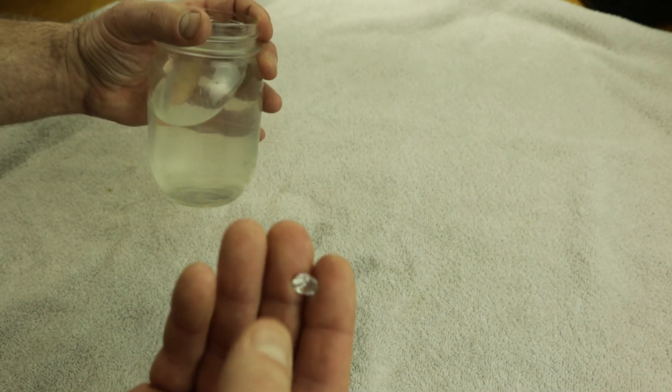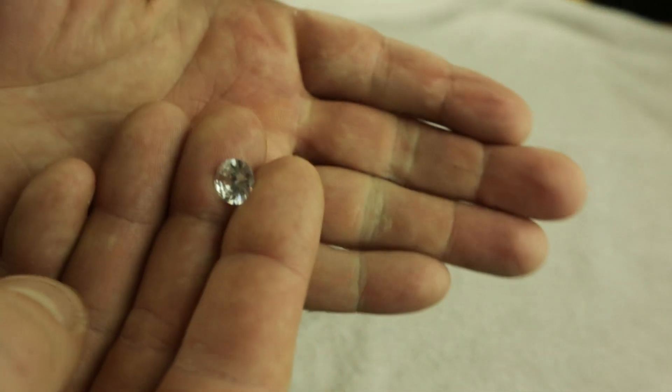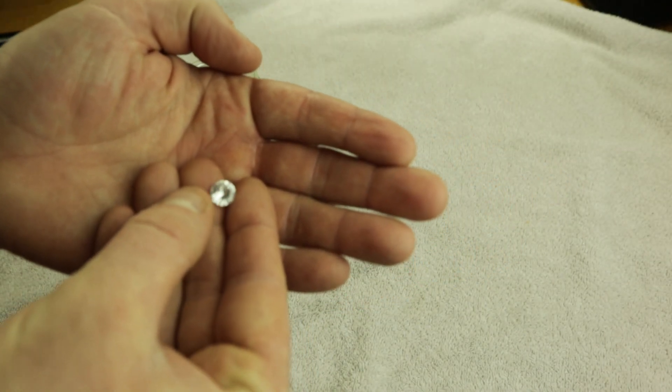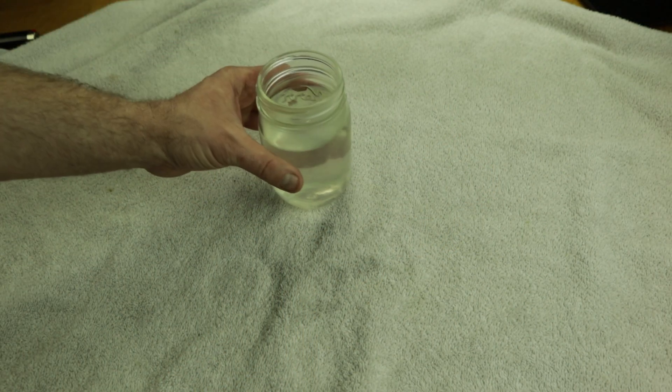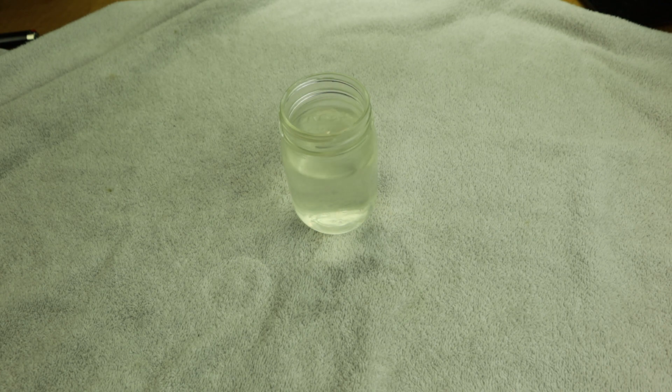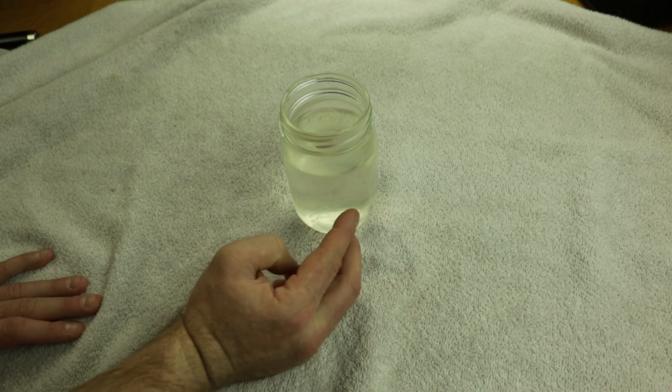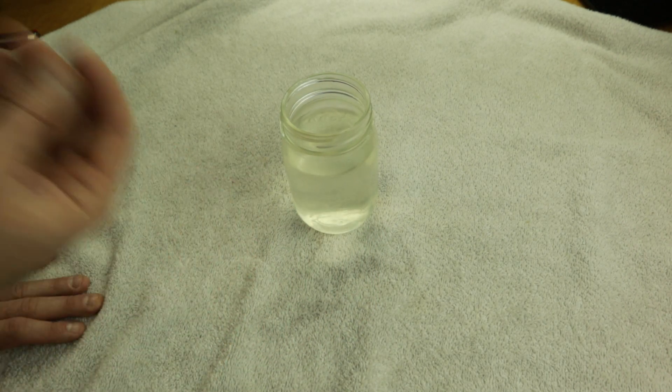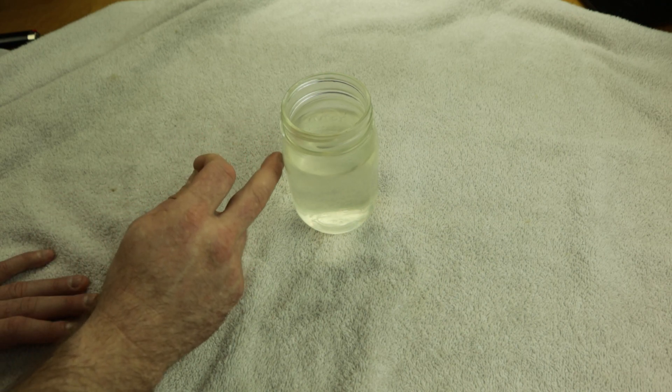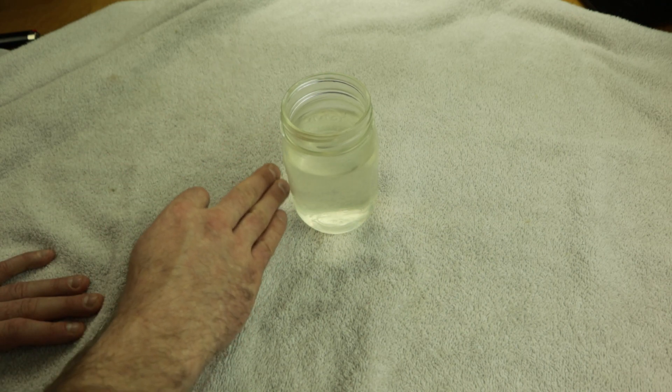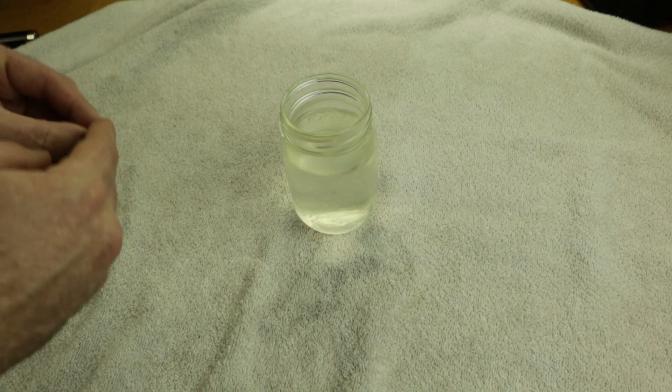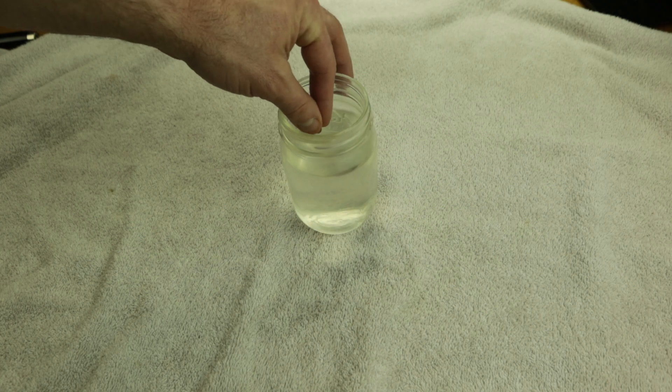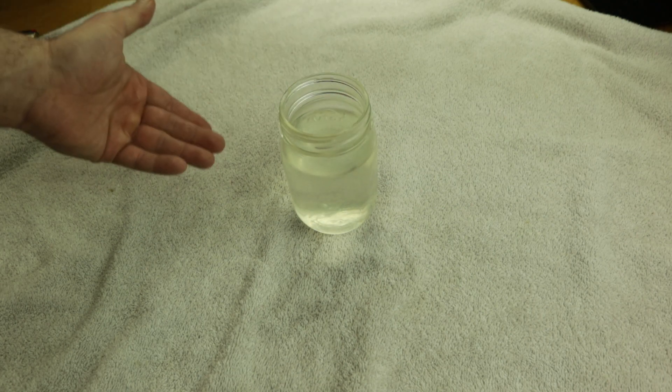The diamond itself looks totally fine, there's nothing at all wrong with it. The diamond didn't take the beating, the jar definitely took the beating. One other test you can do with a glass of water: if you drop it and it's real, it should just sink like a rock, straight to the bottom. Three, two, one, and as you can see it basically instantly goes to the bottom.